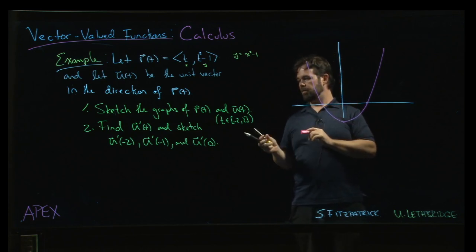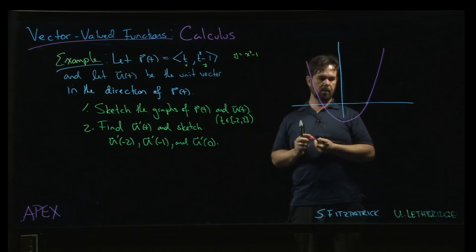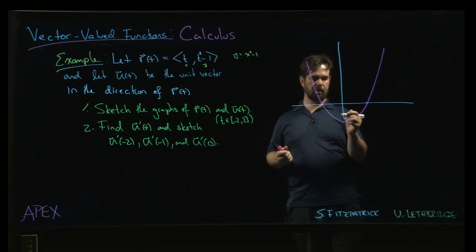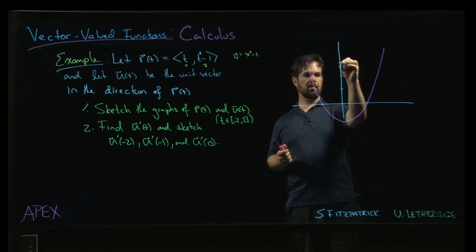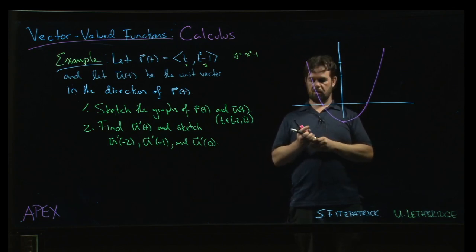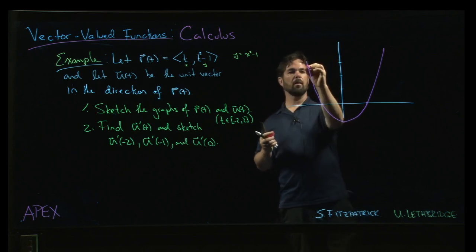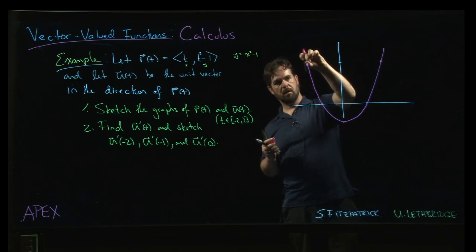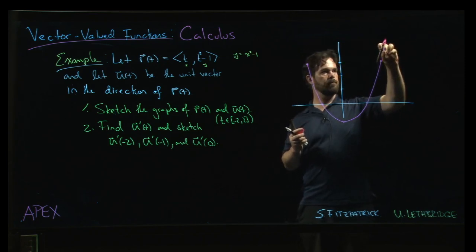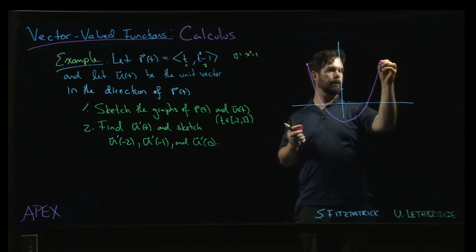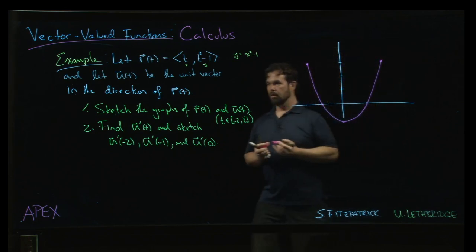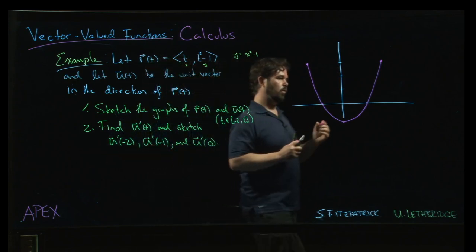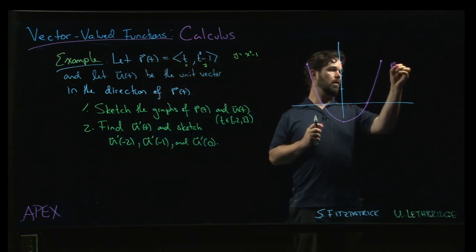Now we should be careful. We want to do this with t running from minus 2 to 2. So if t is plus or minus 2, y is going to be 3. So really we should actually stop our graph there and there. So there's the graph for r of t.